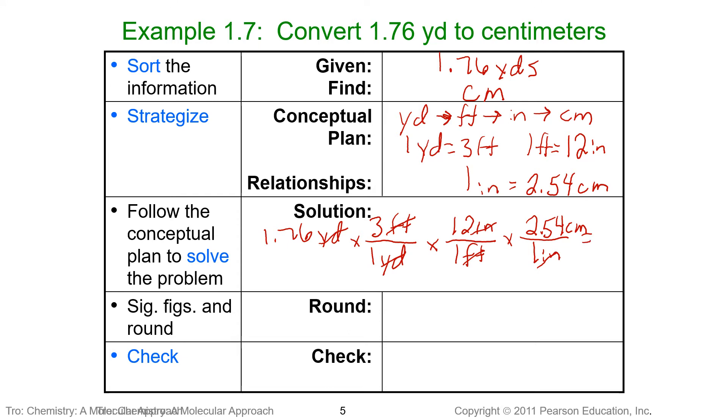We multiply by anything across the top. We divide by anything on the bottom, since it's one, it's not going to change our answer. And we end up with 160.9344 centimeters.